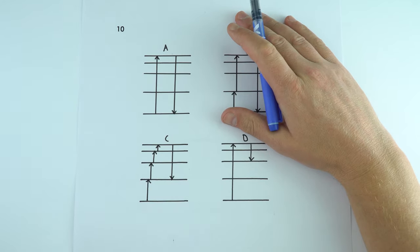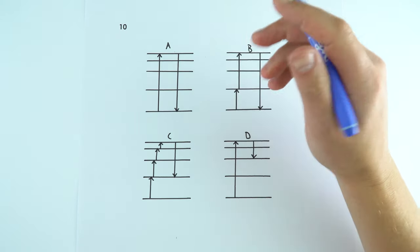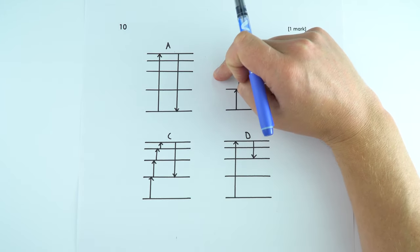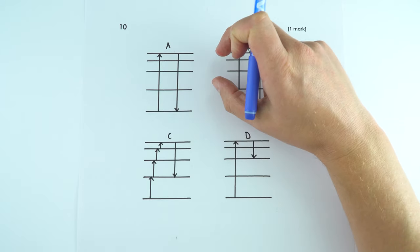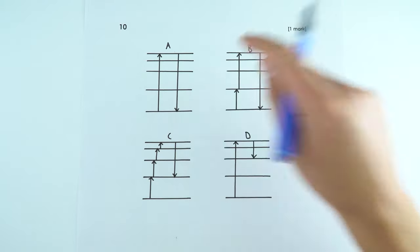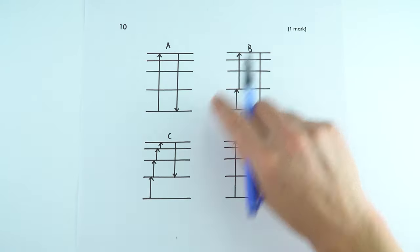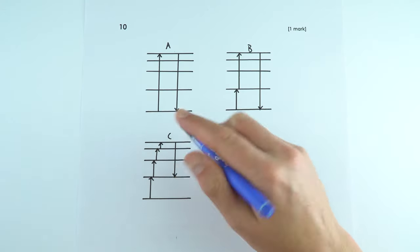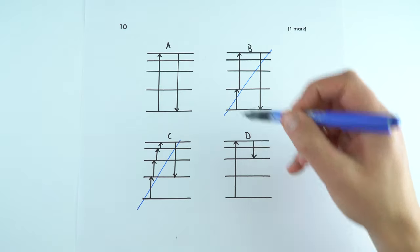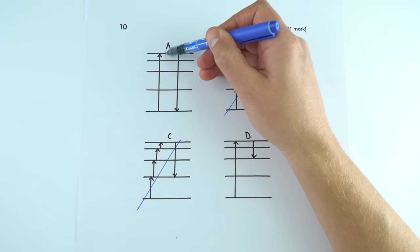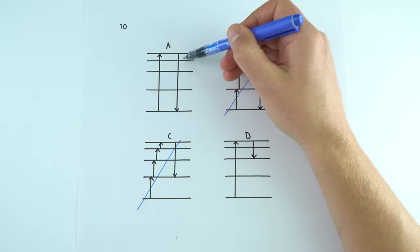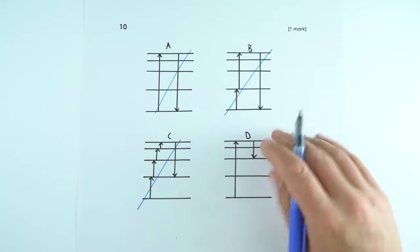Question 10: excitation in a fluorescent tube — a UV photon is absorbed and a visible light photon is emitted. UV photons are more energetic than visible light, so the energy absorbed must be greater than the energy emitted. Options B and C show two or four photons absorbed, so they're eliminated. Option A shows the same energy absorbed and emitted, so it's wrong. The answer is D: a high-energy photon absorbed and a lower-energy photon emitted.